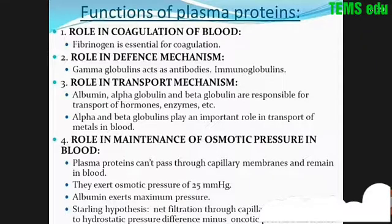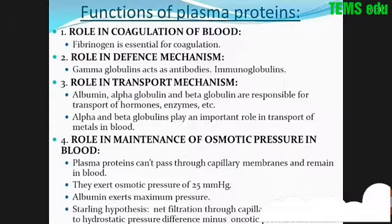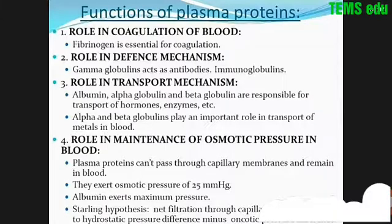In summary, the functions of plasma proteins: number one, role in coagulation of blood — fibrinogen is converted into fibrin, and fibrinogen is essential for coagulation. Number two, role in defense mechanism — gamma globulins are antibodies; immunoglobulins consist of antibodies which help in maintaining immunity.